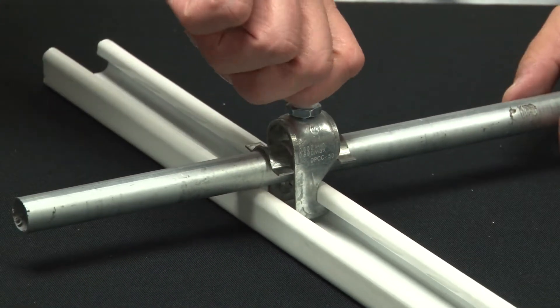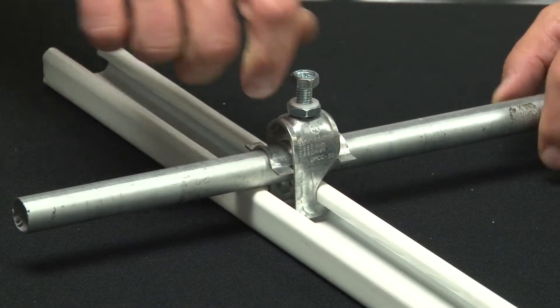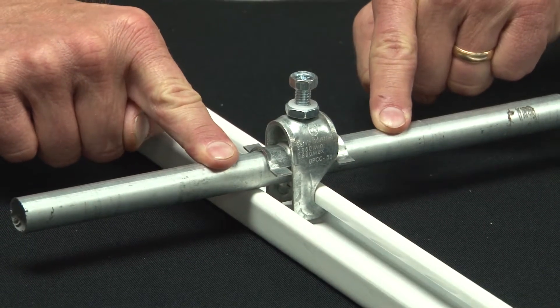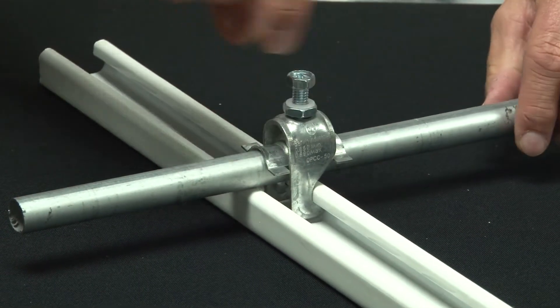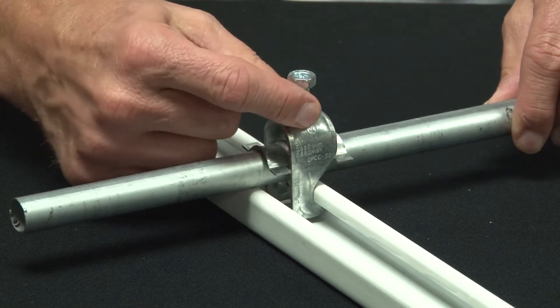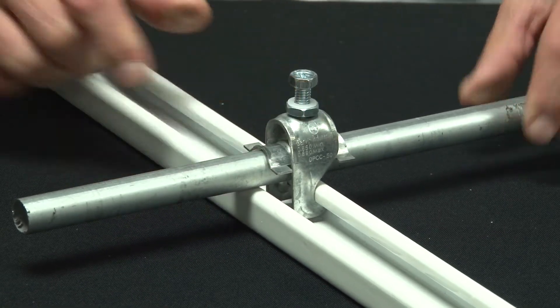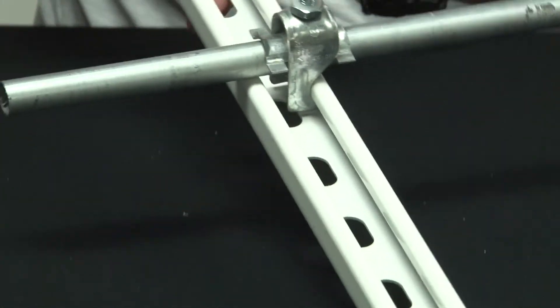The pressure that you apply locks the conduit against the strut, and you can then secure the nut to prevent vibratory loosening. The conduit is held tightly in place.